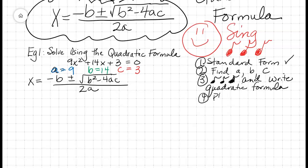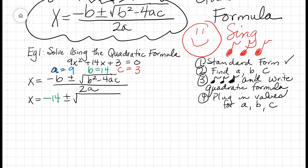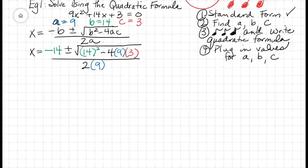Very simply, you're going to now plug it in — plug in the values for A, B, and C. Be careful with the negative. X is equal to — B is 14, so I have negative 14, plus or minus B squared, 14 squared, minus 4 times 9 times 3. Everybody with me? All over 2 times 9. We are going to simplify the radicand first.